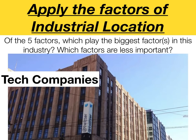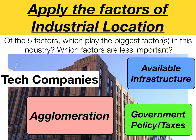Take tech companies — Twitter is located here in San Francisco at Ninth and Market. The biggest factor is agglomeration because this is the heart of Silicon Valley, the hearth of technology in the United States. They have many like-minded businesses, employees to choose from, and available infrastructure. Twitter did threaten to leave San Francisco a few years back, but the government gave them a large tax credit, so they decided to stay because of government policy.